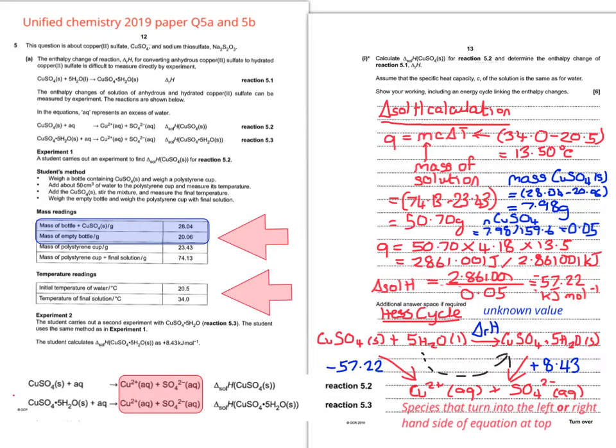So it also says that in experiment 2, a student carries out a second experiment, but this time with the hydrated salt. And this time they got plus 8.43. So you can put that on the right hand side. Now you have to follow the indirect route, which I've indicated using a little dotted arrow. And now I'm just going to create a bit of space on the bottom left hand corner to work this out.